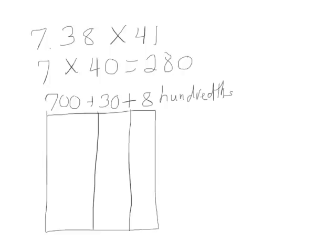Continuing with our area model, we have 40 plus 1. We're ready to multiply and find our partial products. 8 times 1 is 8, 30 times 1 is 30, and 700 times 1 is 700.